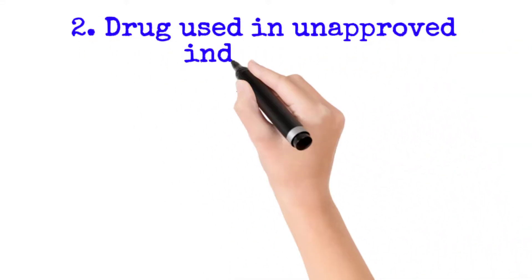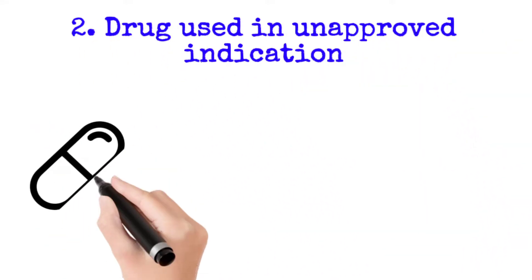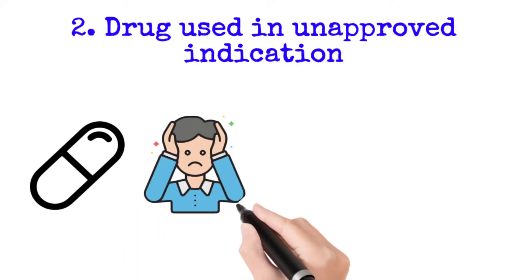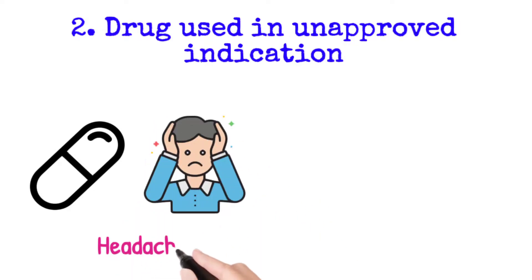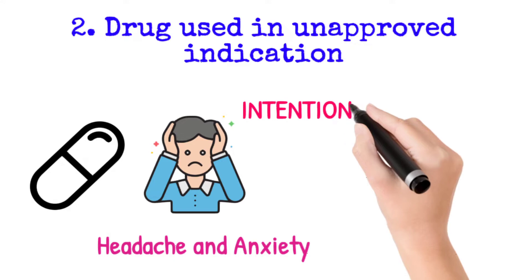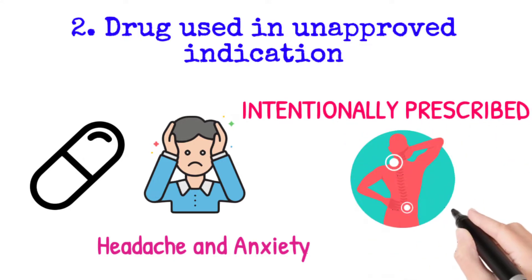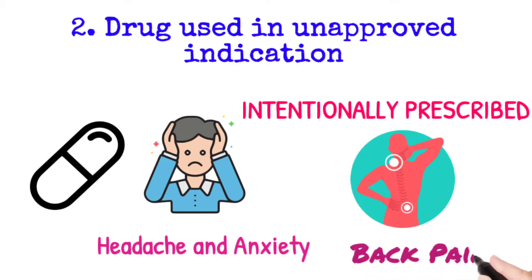The second scenario is drug used in unapproved indication. For example, any drug approved to treat medical conditions like headache and anxiety, however, the doctor intentionally prescribed that drug for the treatment of back pain. This is called drug used in unapproved indication, and this scenario is treated as off-label use.